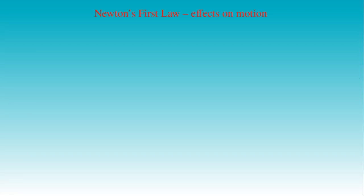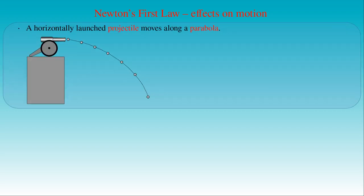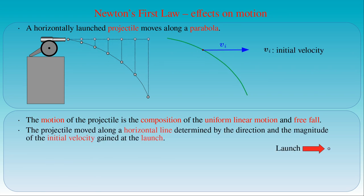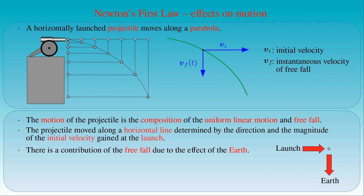We can draw the same conclusion if we study the motion of a horizontally launched projectile. Here we can see a cannon shooting a projectile in the horizontal direction. The projectile moves along a parabola, which we explained by the composition of uniform linear motion and free fall. That is, the projectile moves along a horizontal line determined by the direction and magnitude of the initial velocity gained at launch. However, there is a contribution of free fall, which is the effect of the earth's presence on the motion of the projectile.